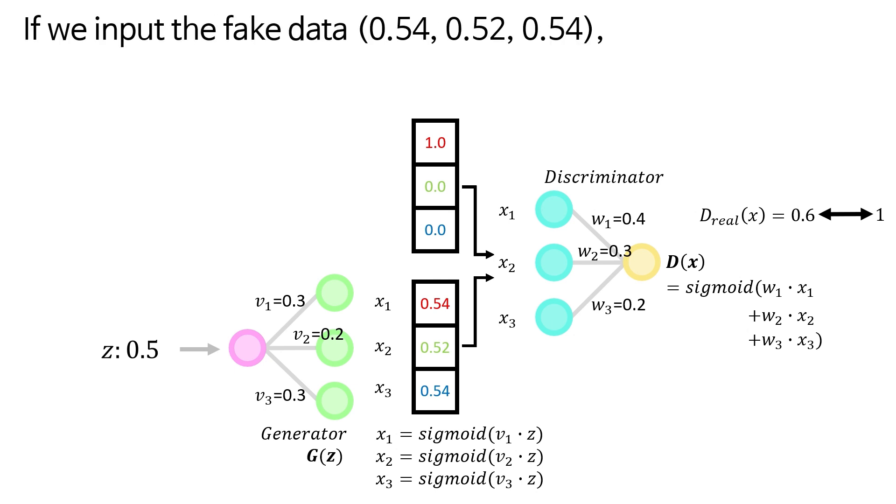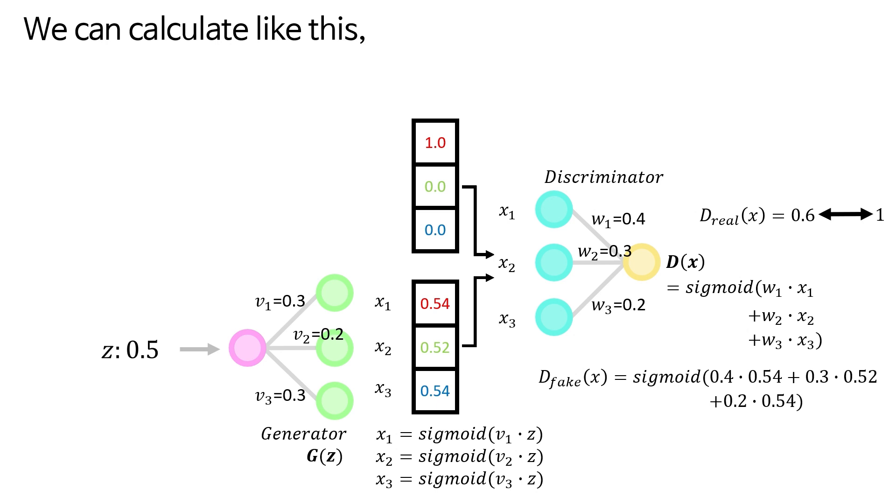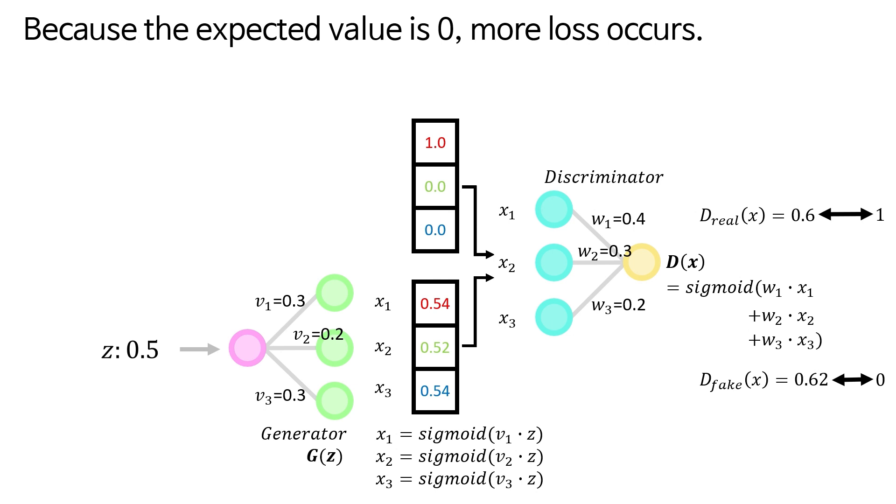If we input the fake data as follows, we can calculate like this, the output is around 0.62. Because the expected value is 0, more loss occurs. Now we begin backpropagation.